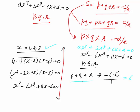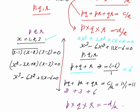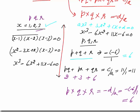Sum of the product of the roots taken two at a time: pq plus pr plus qr equals c by a. Here c is 11 and a is 1, so the answer is 11. We can verify: p times q is 1 times 2 equals 2; p times r is 1 times 3 equals 3; q times r is 2 times 3 equals 6. And 2 plus 3 plus 6 equals 11. Product of all the roots, p times q times r, equals minus d by a. d is minus 6, so minus of minus 6 by 1 equals 6. And indeed 1 times 2 times 3 equals 6. All formulas are verified.